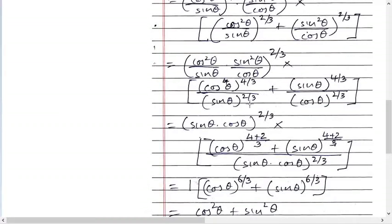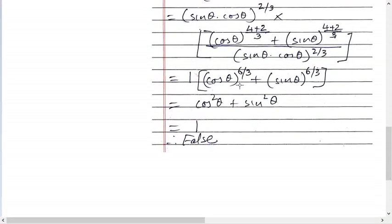What's happening outside the bracket: sine theta cos theta raised to 2/3. Inside the bracket in the denominator: sine theta cos theta raised to 2/3. They get cancelled with each other. So what remains: cos theta raised to 6/3 plus sine theta raised to 6/3. But this is cos square theta plus sine square theta, that equals 1.